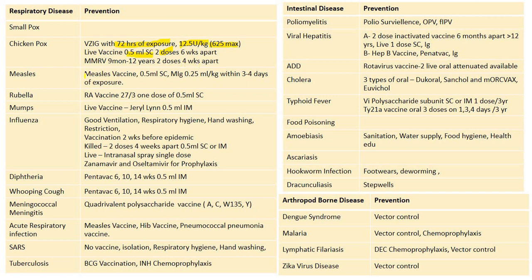Measles vaccine is included in the national immunization schedule. Measles immunoglobulin: 0.25 ml per kilogram within three to four days of exposure. Rubella: RA 27/3 vaccine, one dose, 0.5 ml subcutaneous. Mumps: live vaccine with Jeryl Lynn strain, 0.5 ml IM. Influenza prevention: good ventilation, respiratory hygiene, hand washing, and restriction of movement outside — applicable to all respiratory infections.